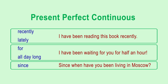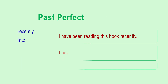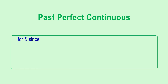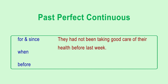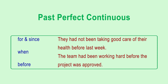As for the past perfect continuous tense, we can name a few time markers that are similar to perfect tenses: for, since, when, before. These sentences demonstrate its usage: They had not been taking good care of their health before last week. The team had been working hard before the project was approved.